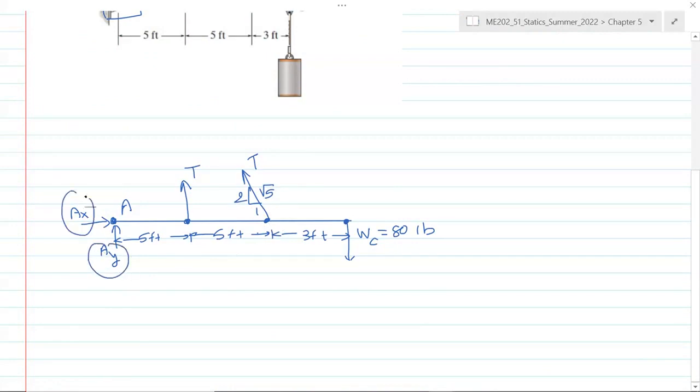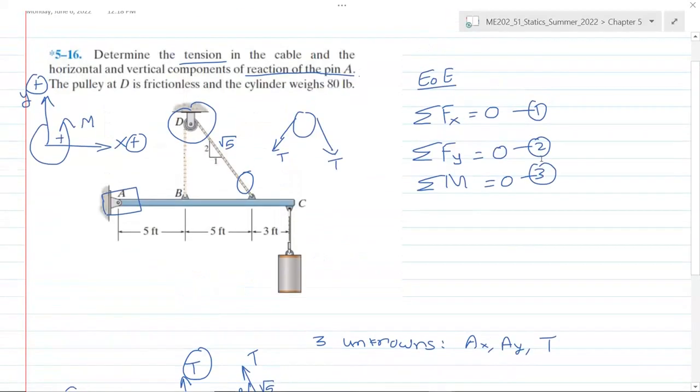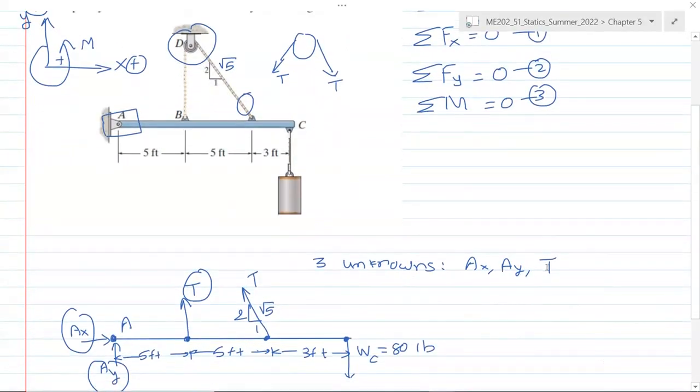We are all set now and we need to identify our unknowns. Our unknowns are Ax, Ay, and T. These T are the same, so if you solve for this T, it's exactly the same force. So we have three unknowns: Ax, Ay, and T. The good thing is we have three equations of equilibrium, that means we can solve the problem.